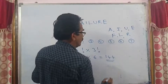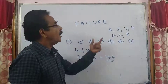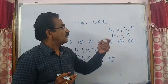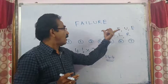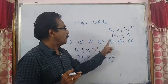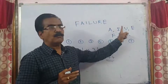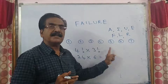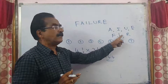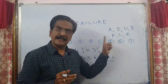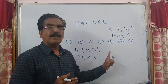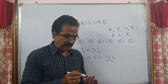So 4 vowels arranged in 4 odd places in 4! = 24 ways, and 3 consonants arranged in 3 even places in 3! = 6 ways. Total = 4! × 3! = 24 × 6 = 144 ways. That is the answer for the letters of FAILURE arranged such that vowels occupy odd places.